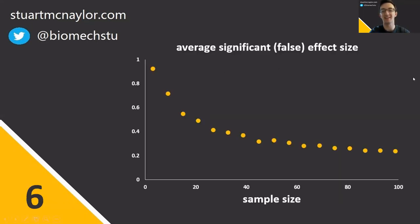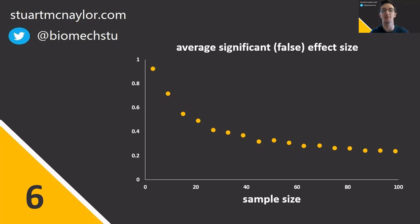Number six is the use of small sample sizes in underpowered studies. The smaller the sample size, the larger the false positive effect size observed on average. So just because you've observed an effect that's large in magnitude, that doesn't mean you can be confident that it's a true effect within your underpowered study.